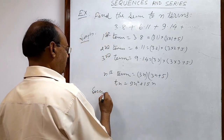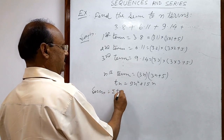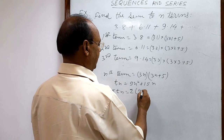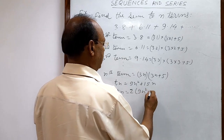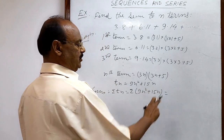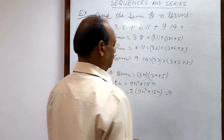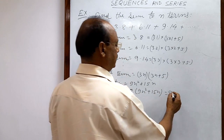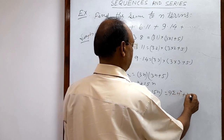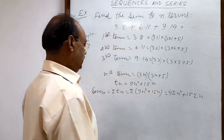Therefore, the sum to n terms S_n = Σt_n = Σ(9n² + 15n). This sigma distributes over both terms, and the coefficients are taken outside: 9·Σn² + 15·Σn.